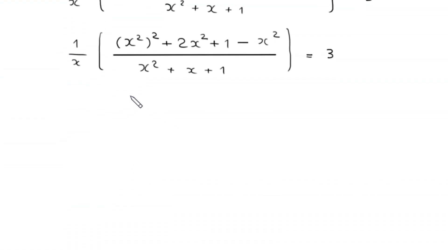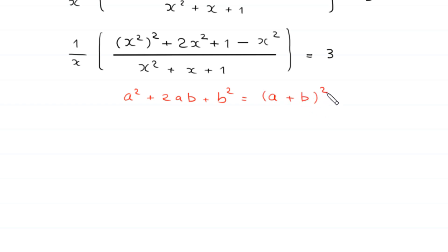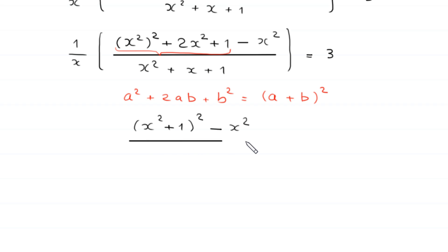Using the algebraic identity a² + 2ab + b² = (a + b)², the expression (x²)² + 2·x²·1 + 1² becomes (x² + 1)². So the numerator becomes (x² + 1)² minus x², divided by x² + x + 1, times 1 over x, equal to 3.